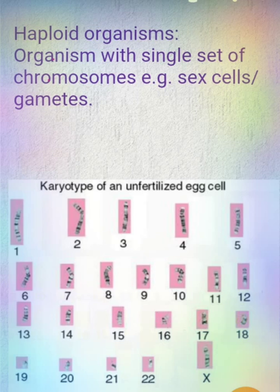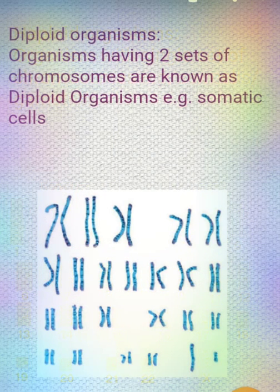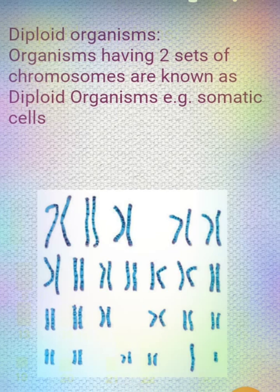The organisms with a single set or single copy of chromosomes are known as haploid organisms. Next are diploid organisms — the organisms which contain two sets of chromosomes. 'Di' means two, 'ploid' means set of chromosomes. We have 23 pairs of chromosomes: 22 are autosomes and one pair of chromosomes are known as sex chromosomes.